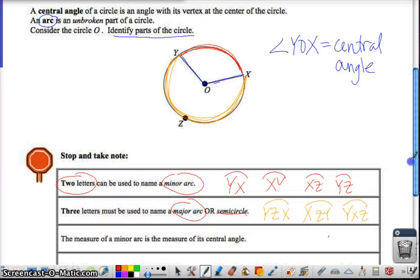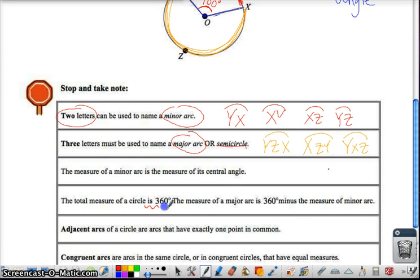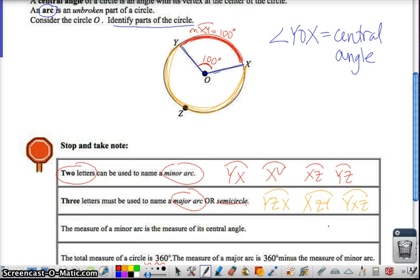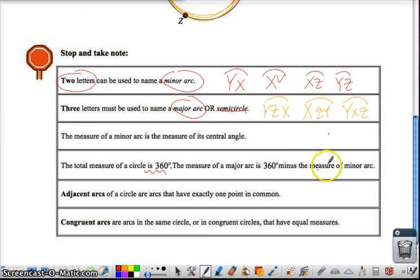The measure of a minor arc is the measure of its central angle. So right here, if you have angle YOX, and I name it to be 100 degrees, then this arc measure here is also going to be 100 degrees. So the measure of arc XY would also be 100 degrees, but we'll talk more about that later. The total measure of a circle is 360 degrees. So some of you might know that, but the total measure of a circle is 360, so if we start at X and go all the way around to X, we would travel 360 degrees. The measure of a major arc is 360 degrees minus the measure of a minor arc. So obviously, if there's only two arcs that we identify in a circle, then those two arcs need to add up to 360 degrees.